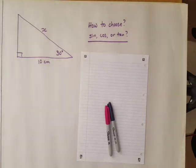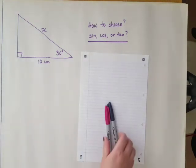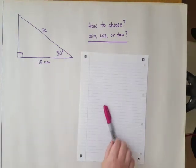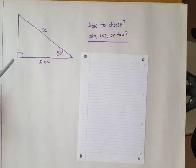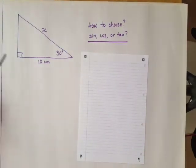Hi everyone, welcome back. In this video we're going to learn how to choose between sin, cos, or tan. Here's a triangle that we've got, and first I'm going to notice that it's a right-angled triangle.